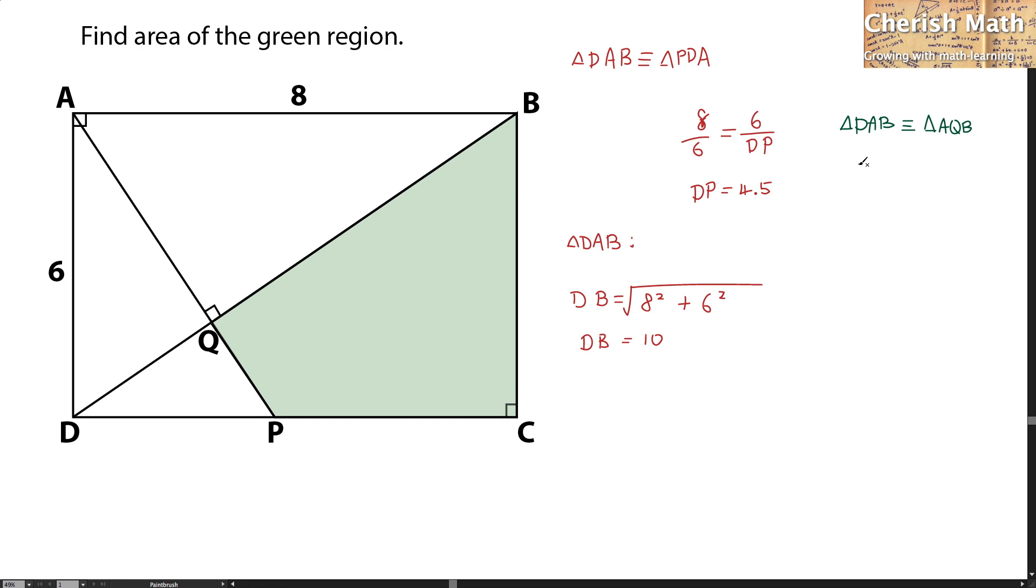Now, by using the scale factor of 10 divided by 8, that is going to apply for 6 divided by AQ. Because 6 and AQ, which is this length AD, and the AQ is in fact similar. So the value of AQ that I'm going to get is 4.8.